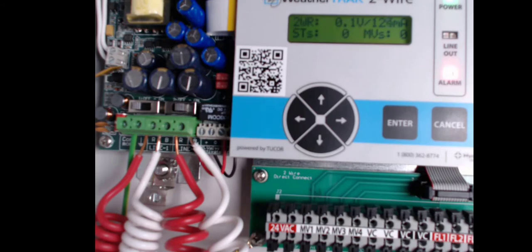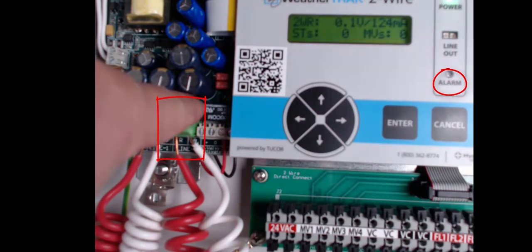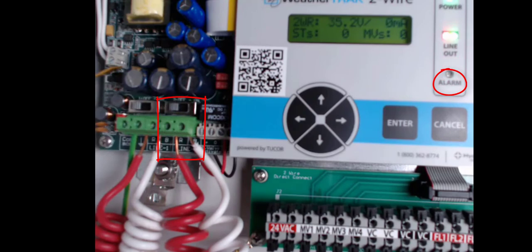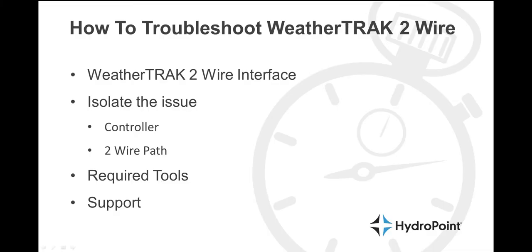Here it is in real time. You see the alert present on the 2-Wire interface — the '2-Wire shorted' message is displayed. I turn off the 2-Wire path that has the known issue on it. It takes the controller a second to reset, but it will go through the process, reset the alert, and go back to its idle state: 35 volts, 2 milliamps. And once we have isolated the controller, we know that the issue is on the 2-Wire path.